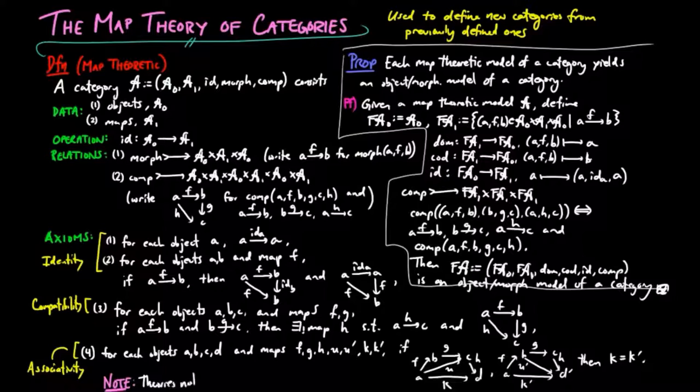But note, the map theory of categories and the object morphism theory of categories are not equivalent since we do not require all maps in the map theory of categories to be morphisms.